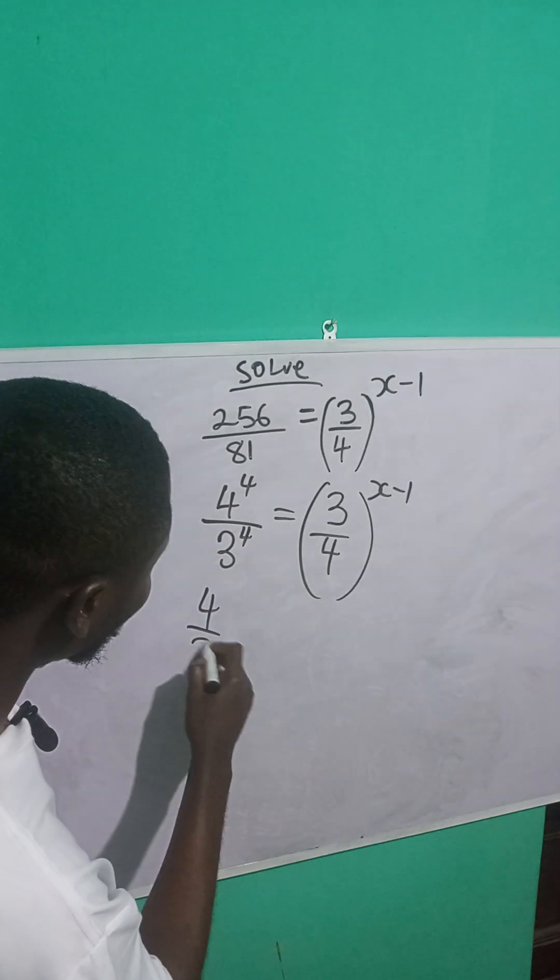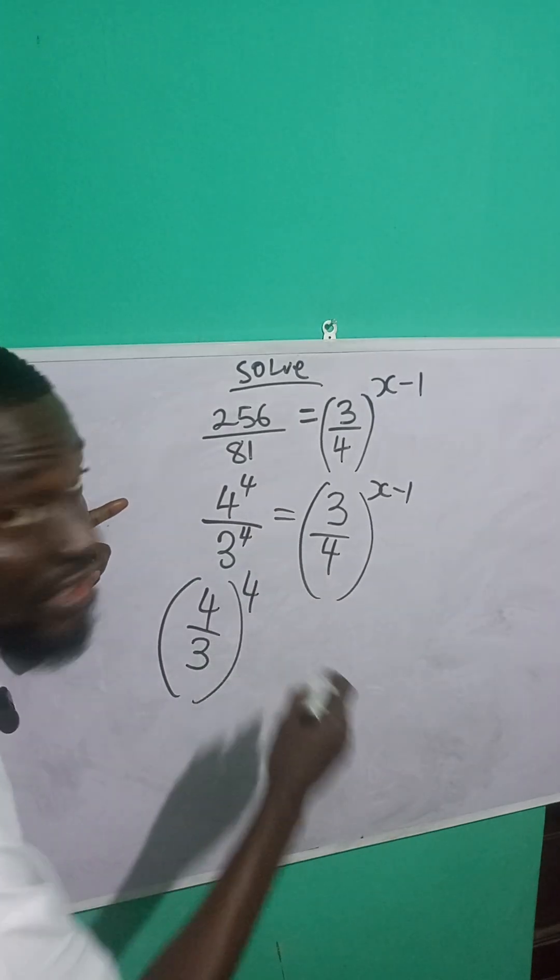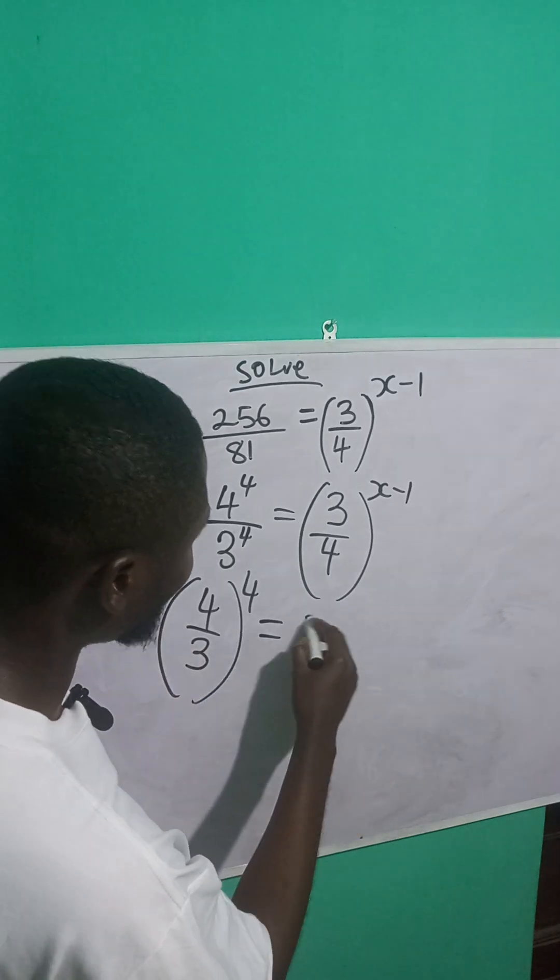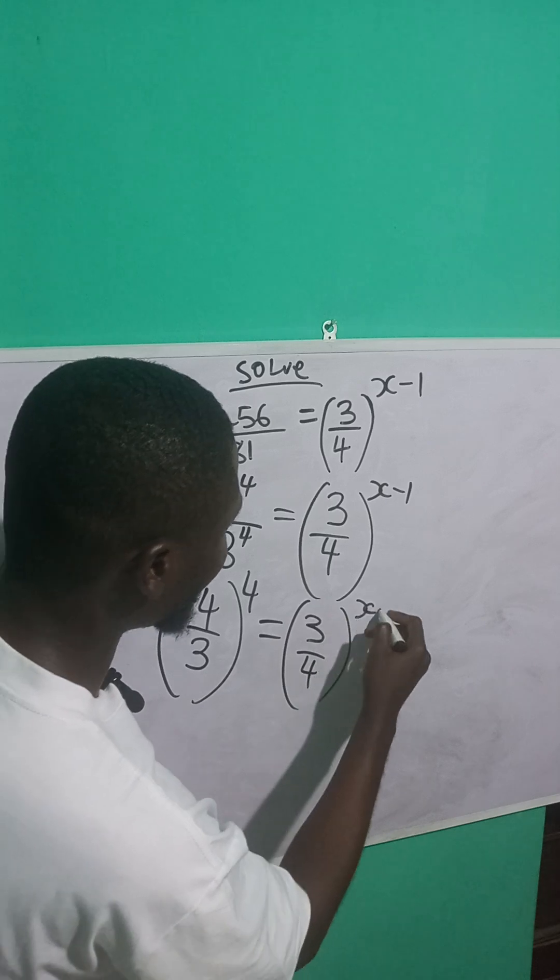So this is what? 4 over 3, all raised to power 4, because I have the same power. I can group them together. It's equal to what? 3 over 4, all raised to power x minus 1.